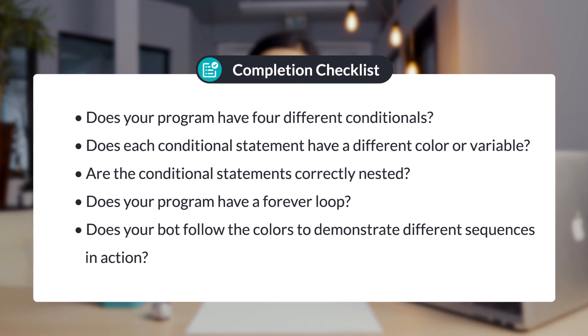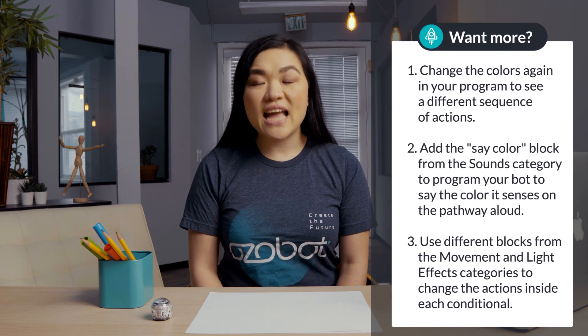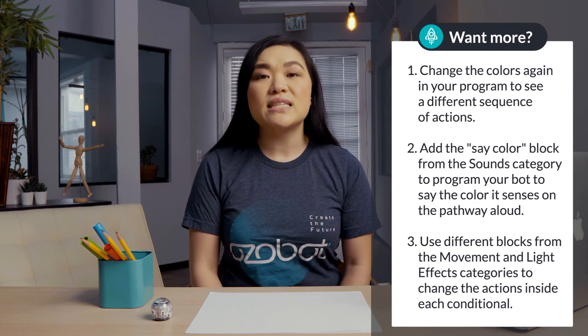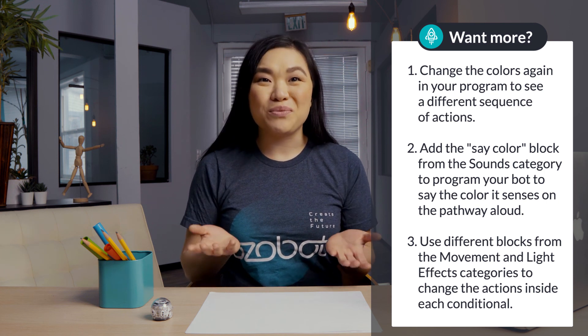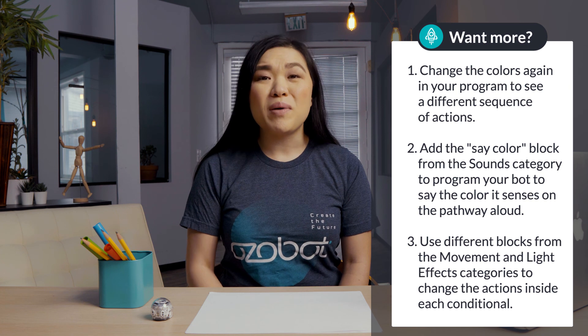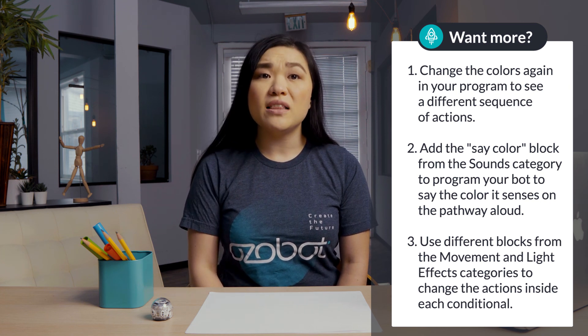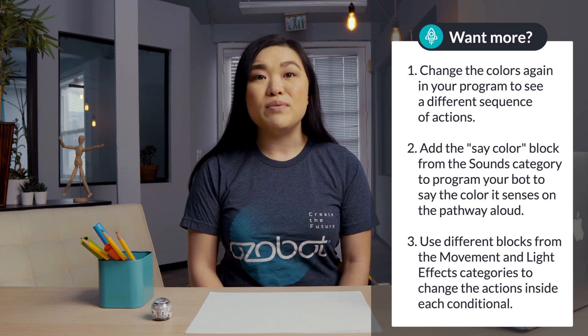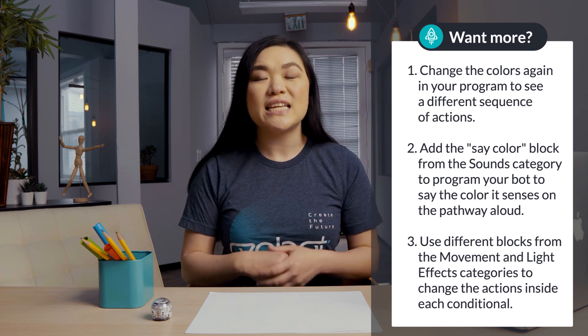Check your work. Does your program have four different conditionals? Does each conditional statement have a different color or variable? Are the conditional statements correctly nested? Does your program have a forever loop? Does your bot follow the colors to demonstrate different sequences in action? If you're looking for more to do, you can change the colors again, add the 'say color' block from Sounds to program your bot to say the color it senses aloud, or use different blocks from Movement and Light to change the actions inside each conditional. Come back again soon for your next lesson.